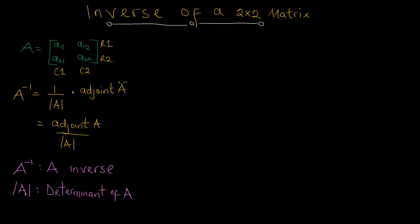From the previous video, we know what the determinant is. Considering this matrix, the determinant of A is A11 times A22 minus A12 times A21. To obtain the determinant, we identify the elements on the leading diagonal — which runs from left to right — take their product (A11 times A22), then subtract the product of the elements on the other diagonal.